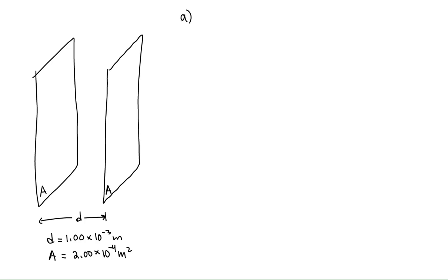For part A, we need to find the capacitance of the capacitor. From previous work, we know capacitance depends only on the geometry of the capacitor, not on charge or potential difference. The capacitance of a parallel plate capacitor equals the permittivity of free space times the area of a plate divided by the separation distance. We should remember that the permittivity of free space is equal to 8.854 times 10 to the minus 12 coulombs squared over newton meters squared.